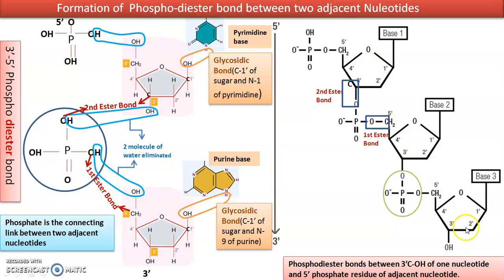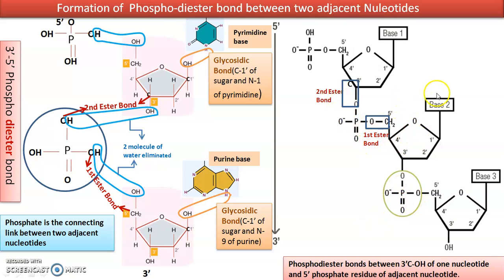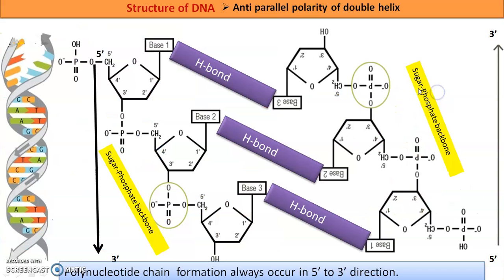Likewise, the chain goes on growing. This is the first base, second base, third base — that means the first nucleotide, second nucleotide, third nucleotide — with a phosphodiester bond between each. That is how it grows. Whether DNA or RNA, the polynucleotide chain is formed in the same way.